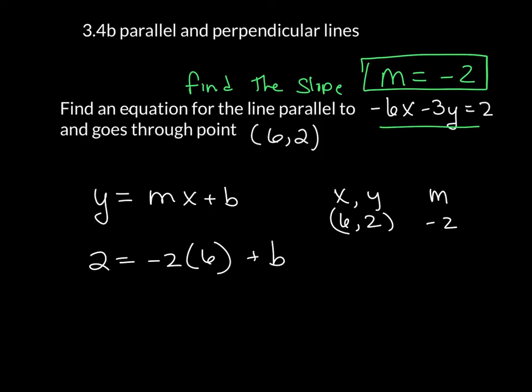We're solving for b here. So then 2 equals negative 12 plus b. I add 12 to both sides and I'm left with 14 equals b. And that's it.